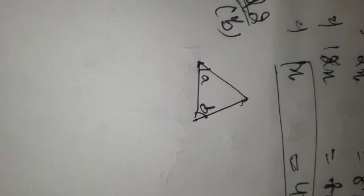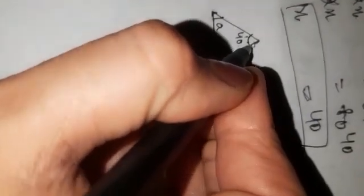The vertex angle is 40 degrees. What are the base angles of the triangle? Base angles need to be found.